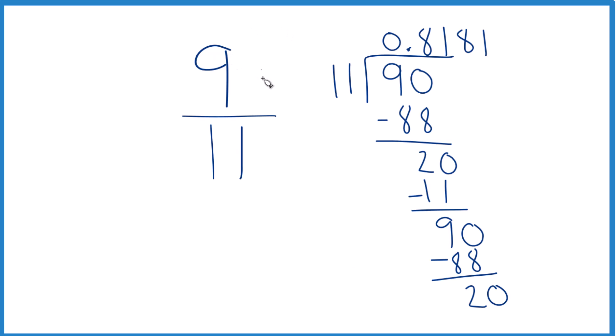So we could say that the fraction 9 elevenths equals the decimal 0.81 and just put a bar over it to show that this keeps repeating.